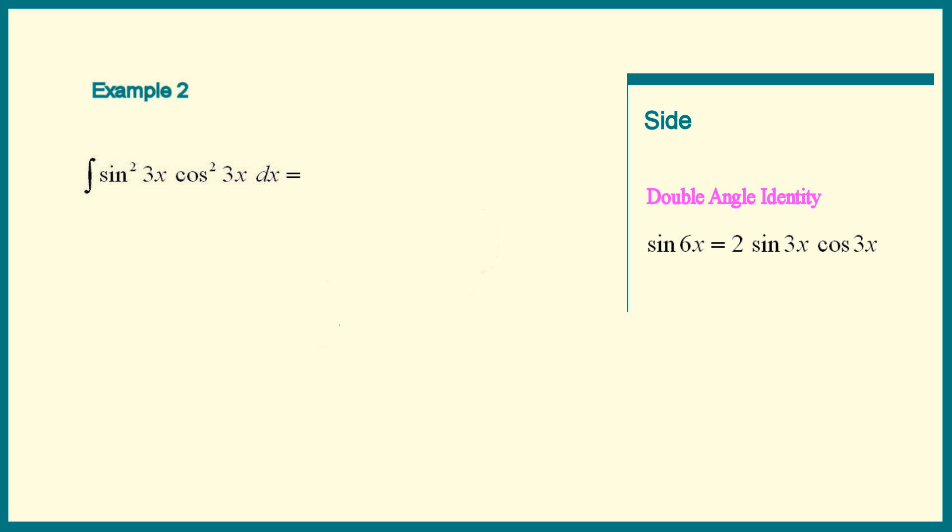Because we see squares in the integrand, let's square both sides. And here's what we get.